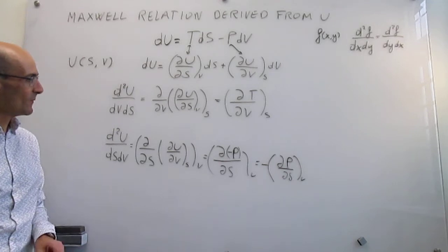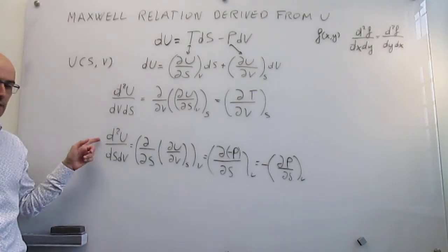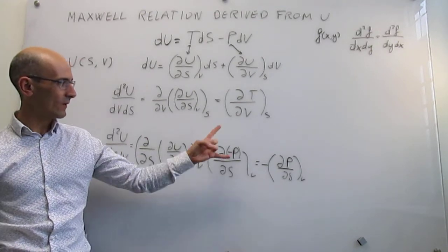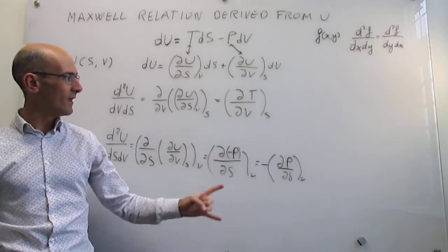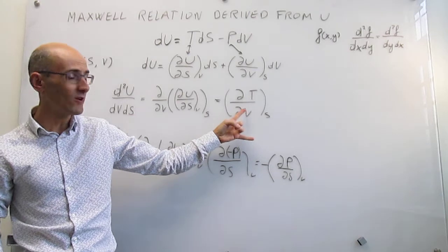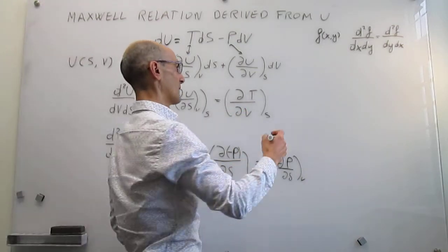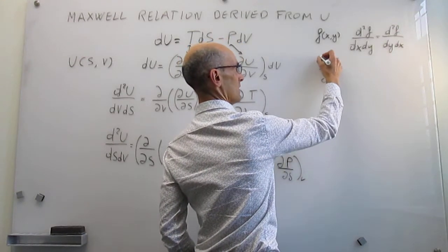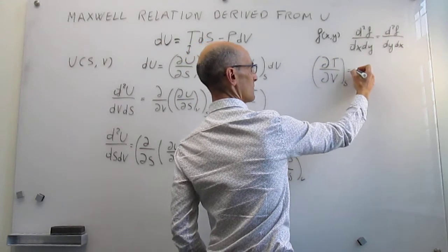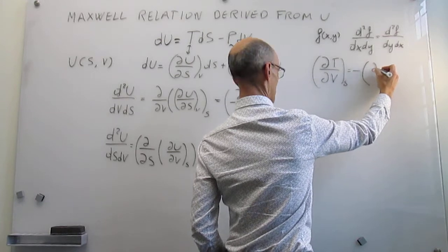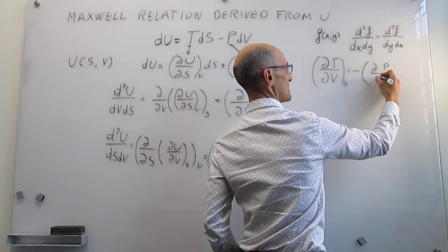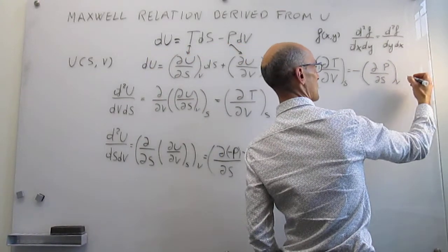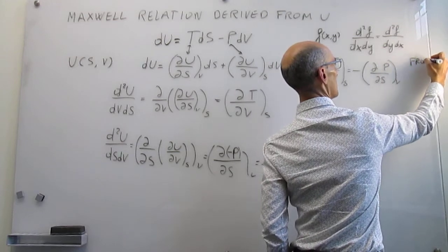This gives us our Maxwell relation: the partial derivative of temperature with respect to volume at constant entropy is equal to minus the partial derivative of pressure with respect to entropy at constant volume. These two second derivatives must be equal because internal energy is an exact differential and path independent. That is the first Maxwell relation obtained from the internal energy.